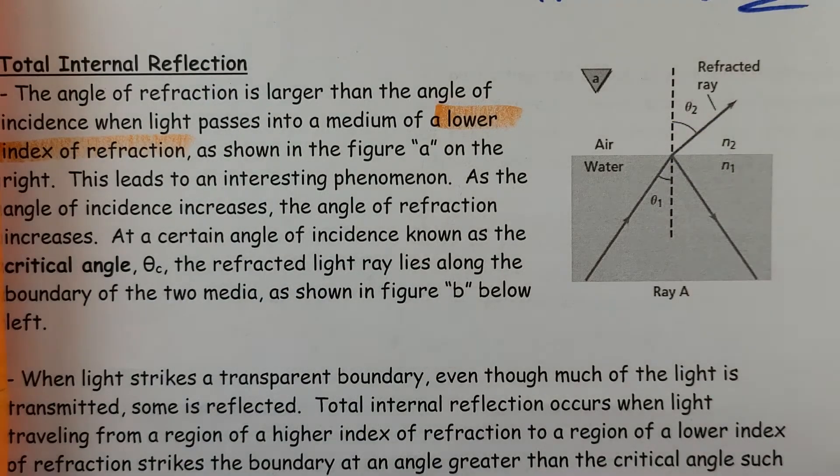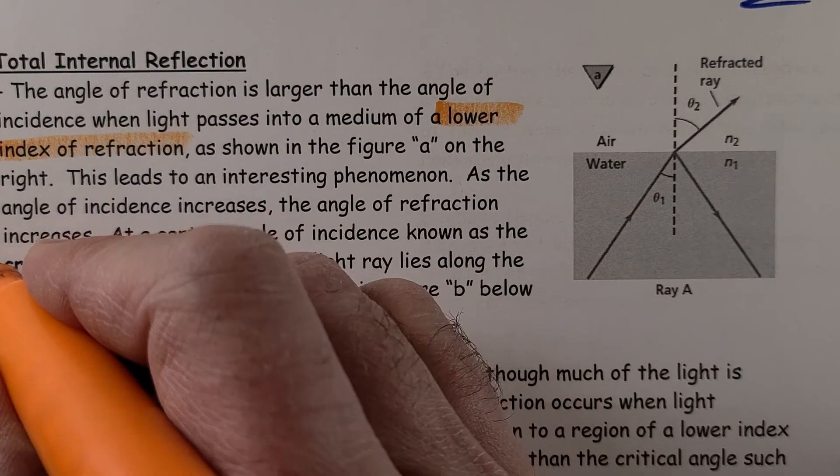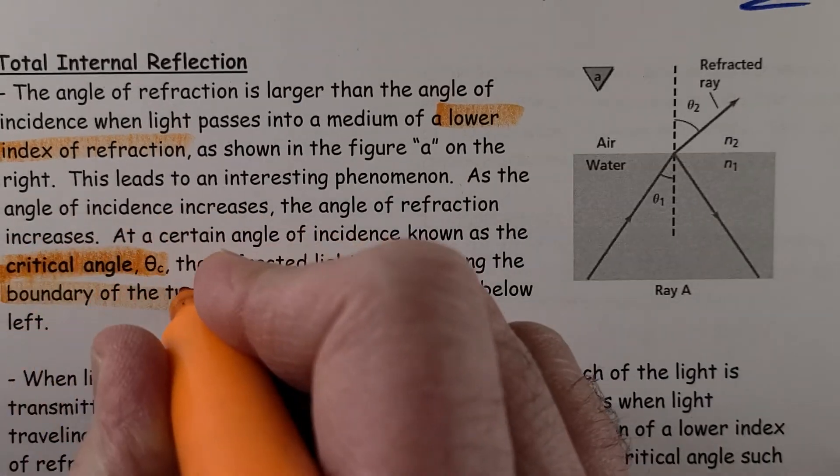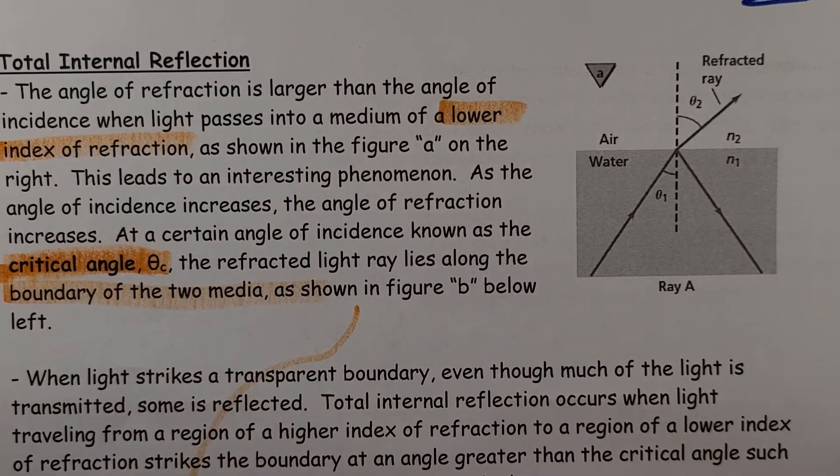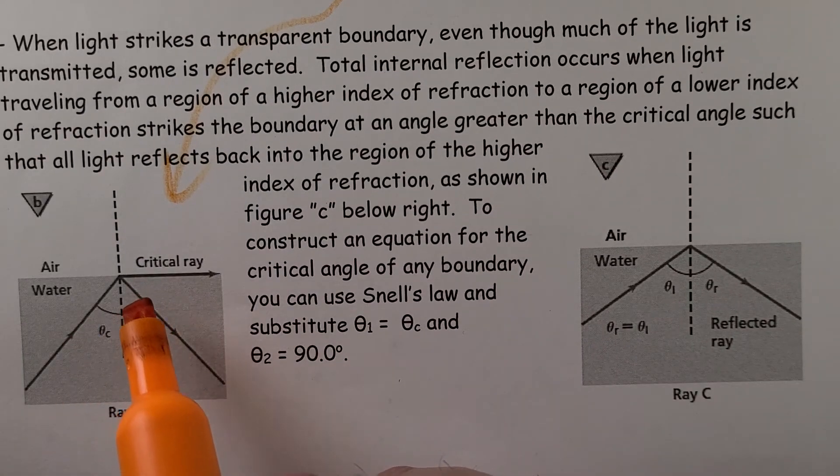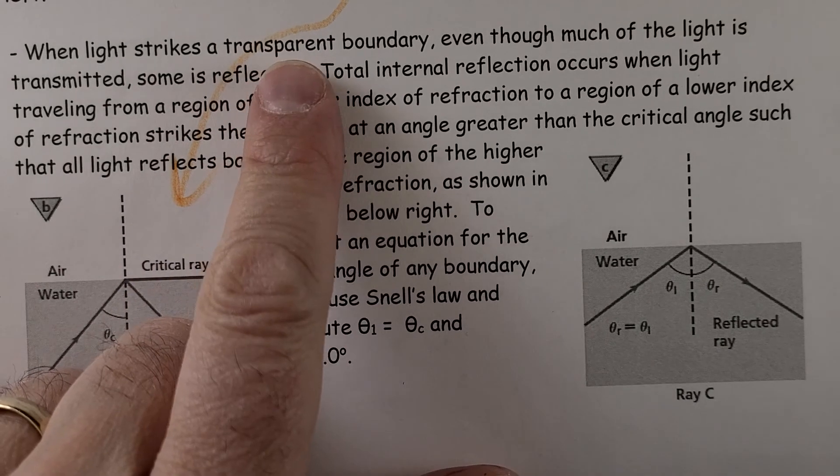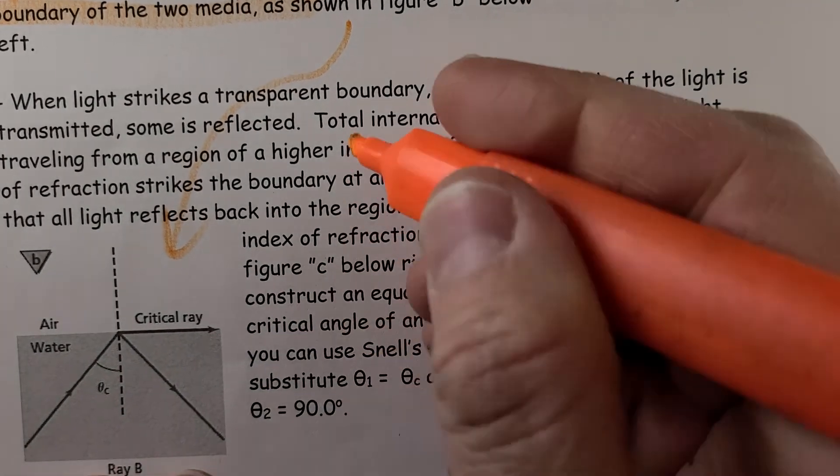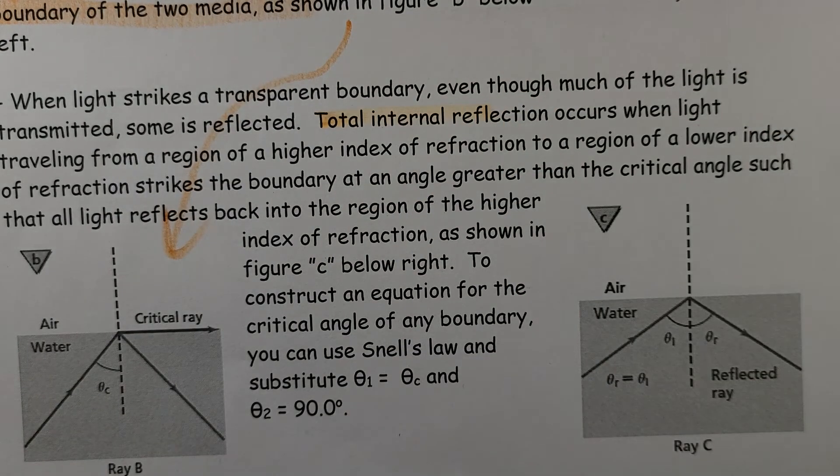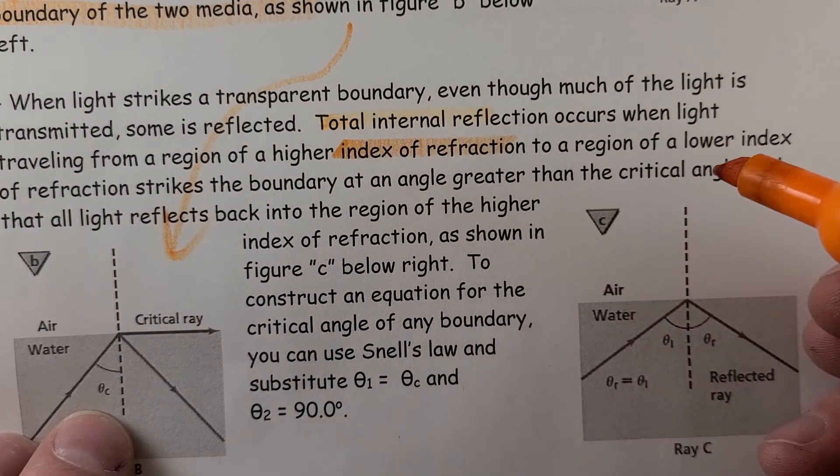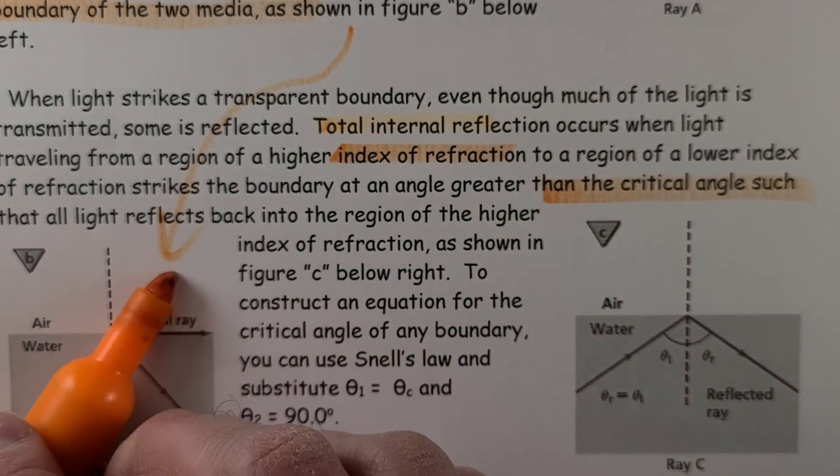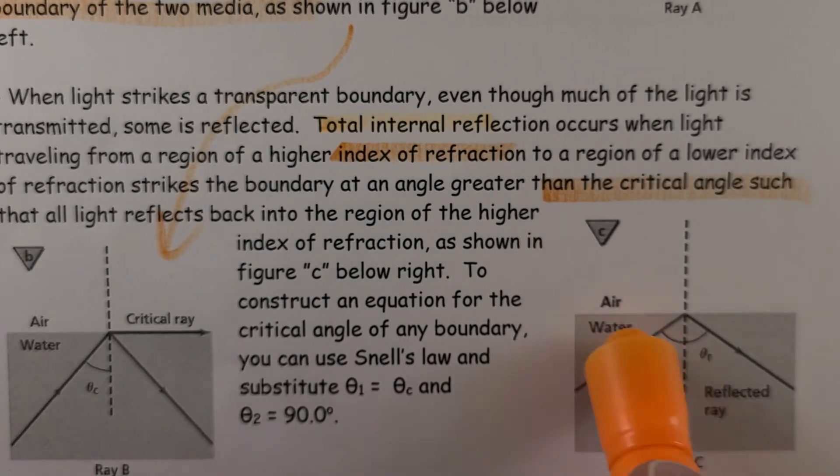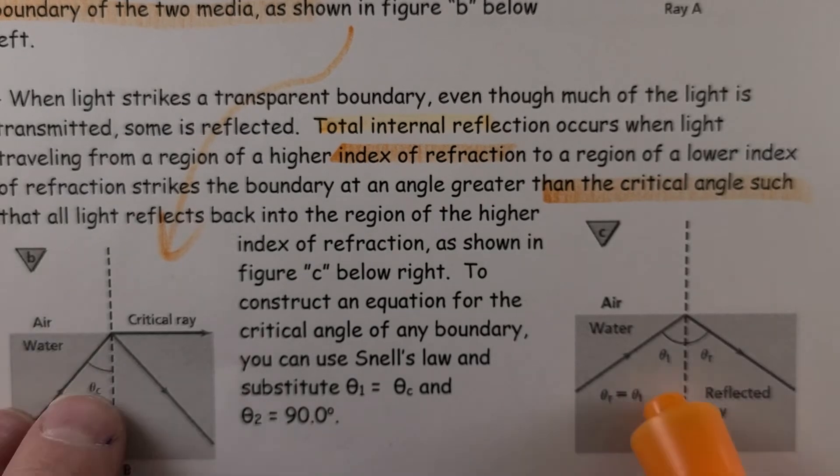So at a certain angle of incidence known as the critical angle, the refracted light lies along the boundary of the two media. Look at that, the critical ray lies right on there. When light strikes a transparent boundary, even though much of light is transmitted, some is reflected. But total internal reflection occurs when light traveling from a region of higher index of refraction to region of lower strikes greater than the critical angle. So if I was to increase this angle a little bit more, all of it is going to be reflected back as seen below. So yes it is reflected backwards.